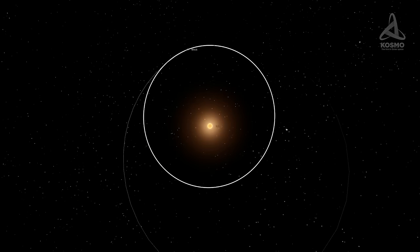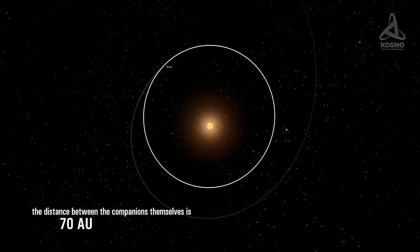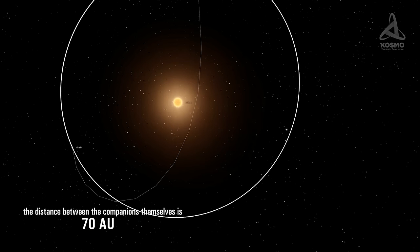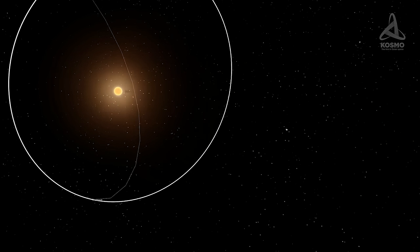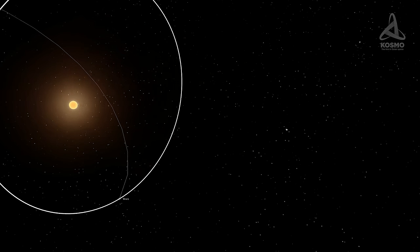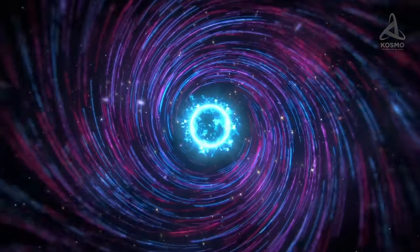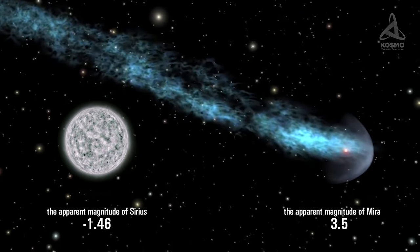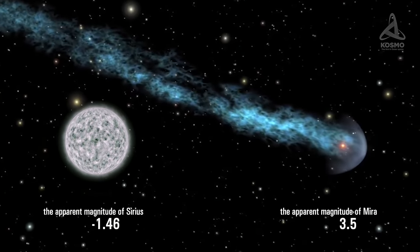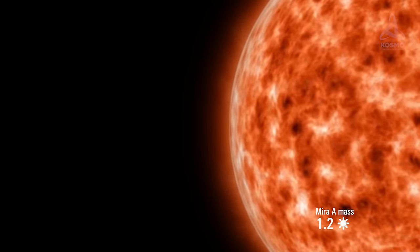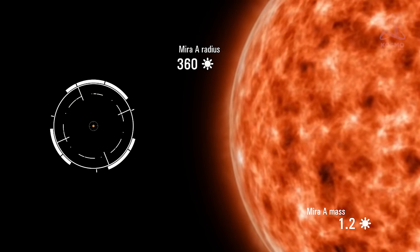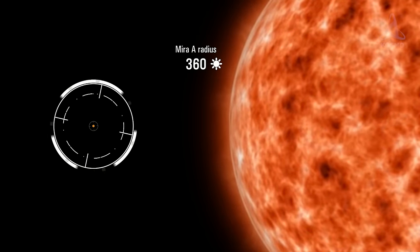The first component in the system is a pulsating variable star with the average apparent magnitude 3.5. Depending on the phase, however, the value may fluctuate between 10 and 2. Just to compare, the apparent magnitude of Sirius is minus 1.46. The mass of the system's first component is approximately 1.2 that of the Sun. Interestingly, its radius is 360 times that of the Sun.